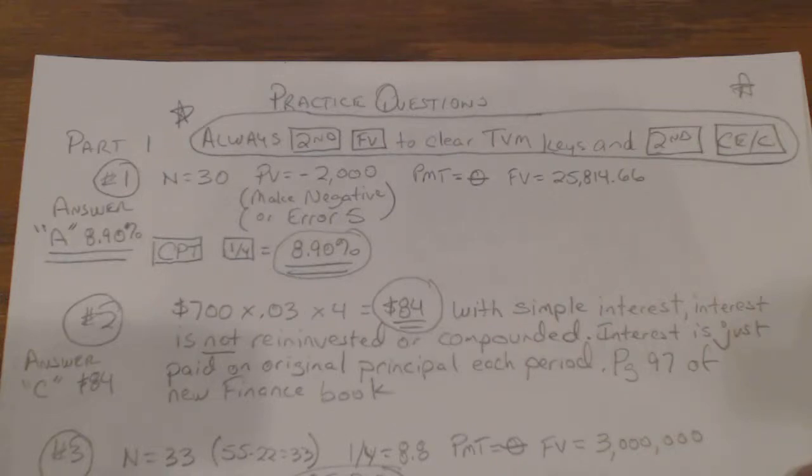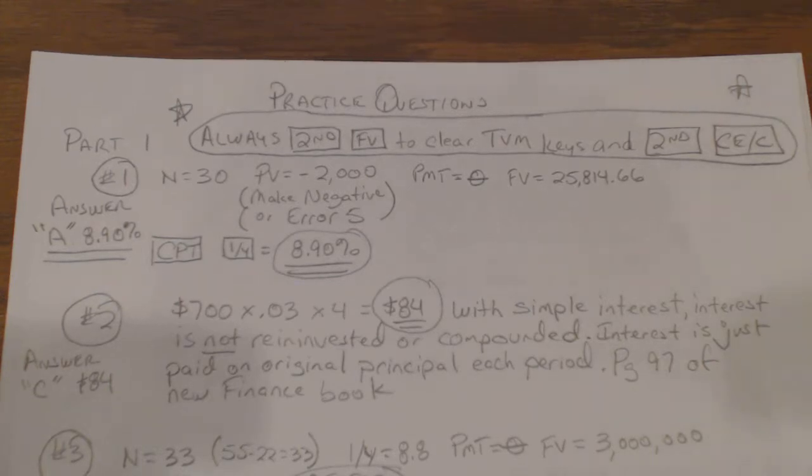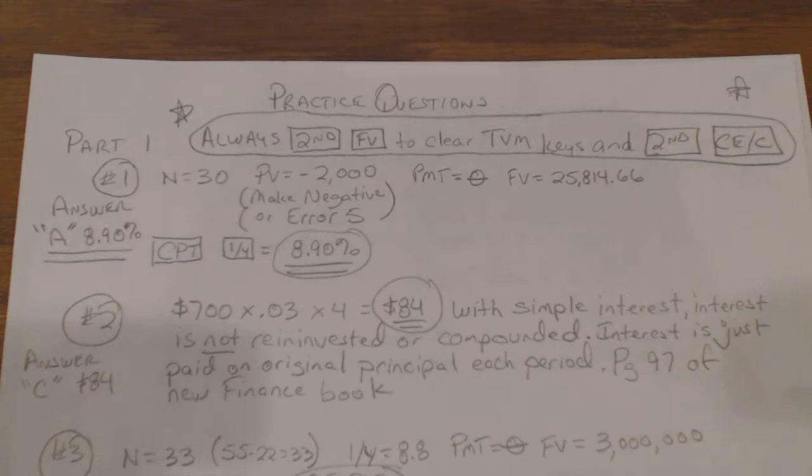Okay, this is Practice Problems Part 1. I've sent you copies of this so you have all the answers. I'm just going to go over the important parts. Starting off, always remember to clear your calculator a couple different ways: Second FV to clear the time value of money keys, and then Second CE/C to clear all your other work. Just make sure you do that.